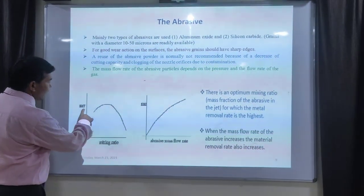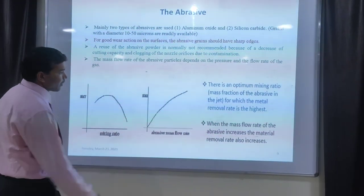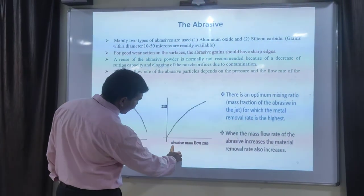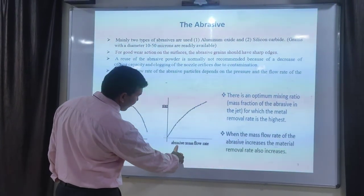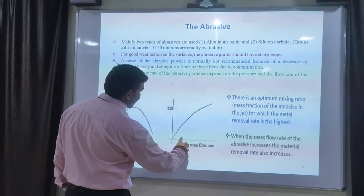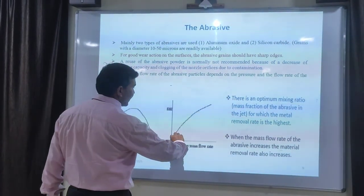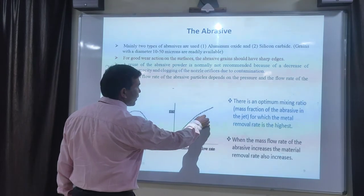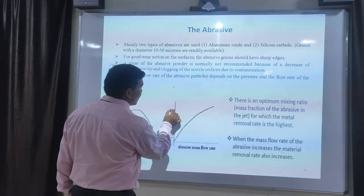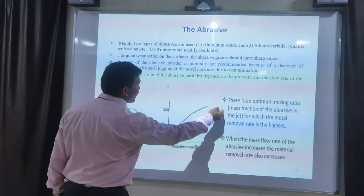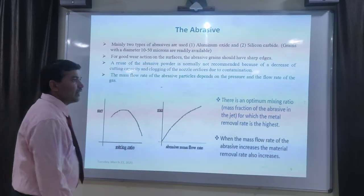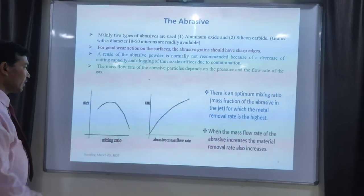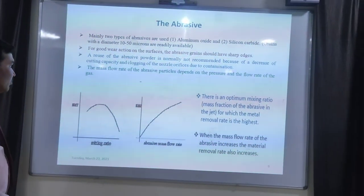This is metal removal in process. MR at y-axis given, x-axis is abrasive mass flow rate. When the mass flow rate will be increasing — one bar, two bar, three bar, four bar — mass rate also will be continuously, simultaneously increasing. These are different between flow rate and mass rate.